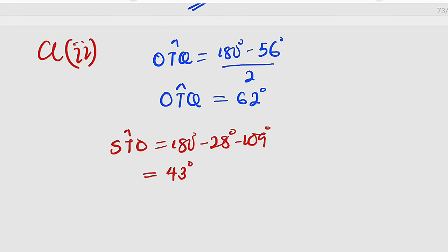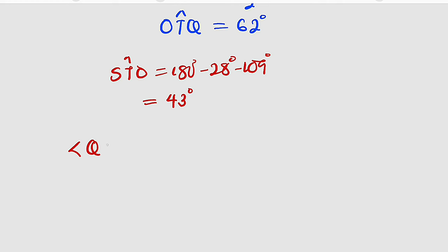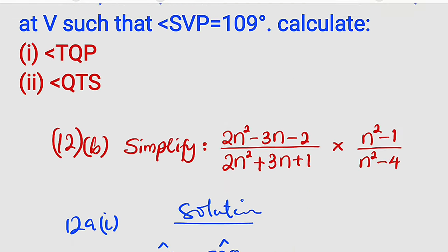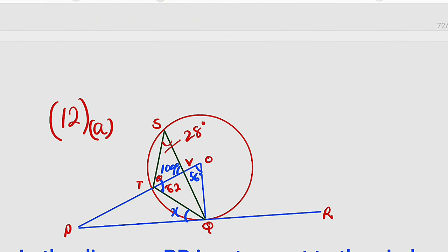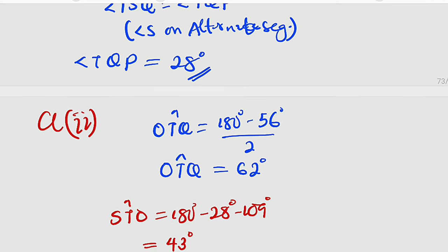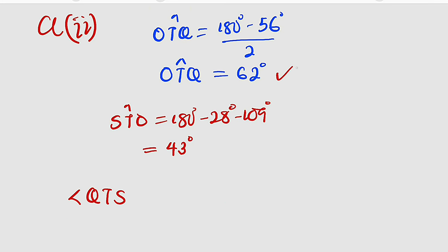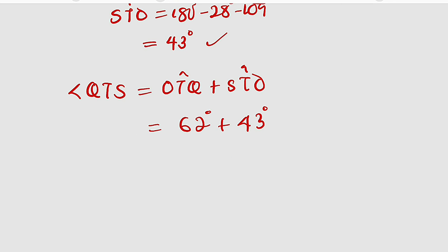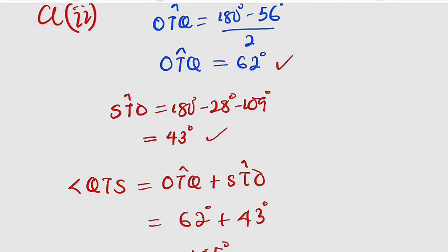So what we are looking for is angle QTS, which is a combination of angles OTQ and STO. Therefore, QTS = OTQ + STO = 62 + 43 = 105 degrees. And we have successfully solved the second part.